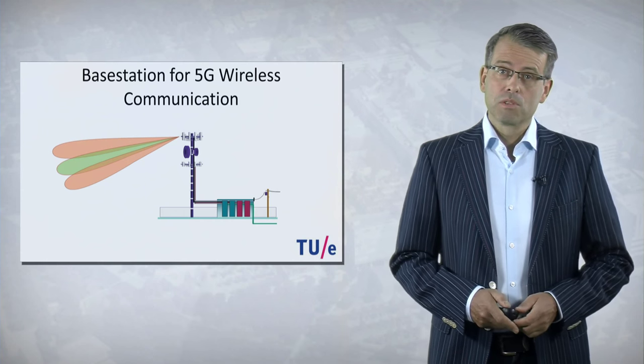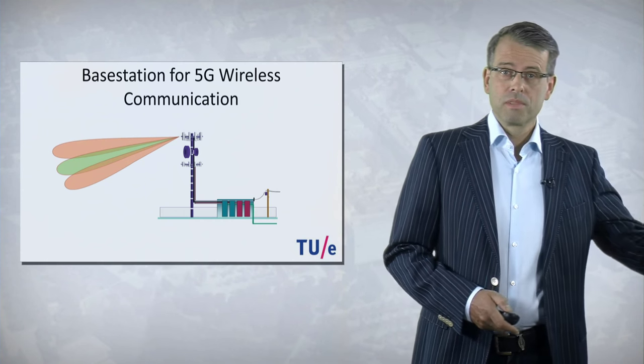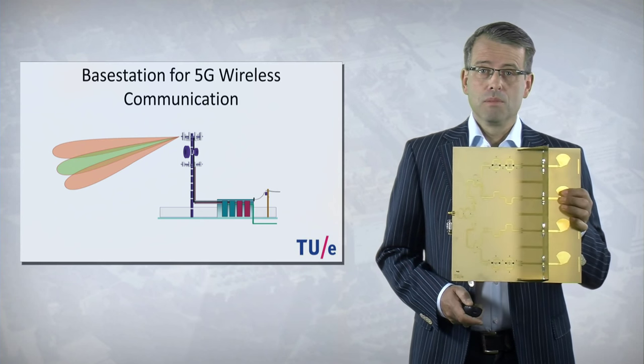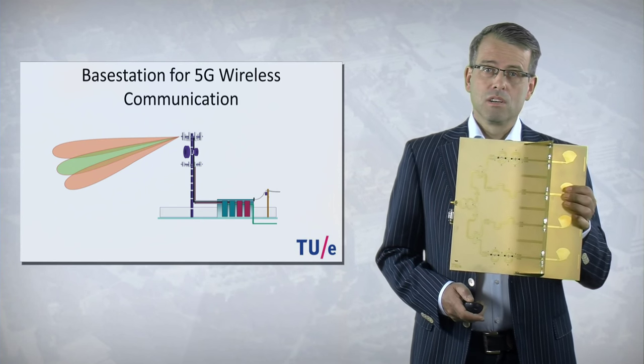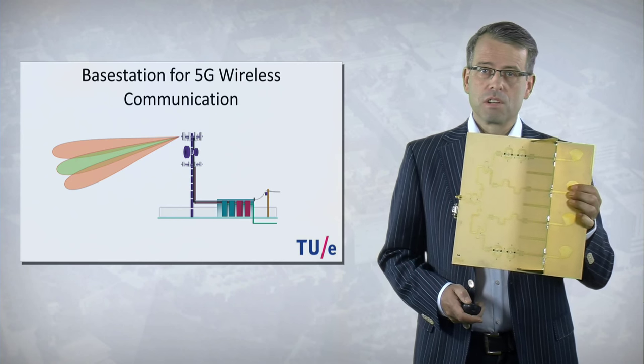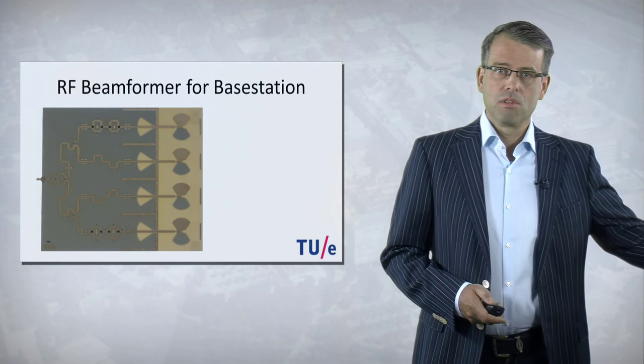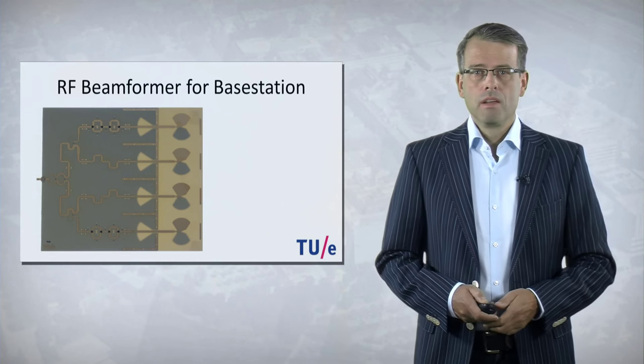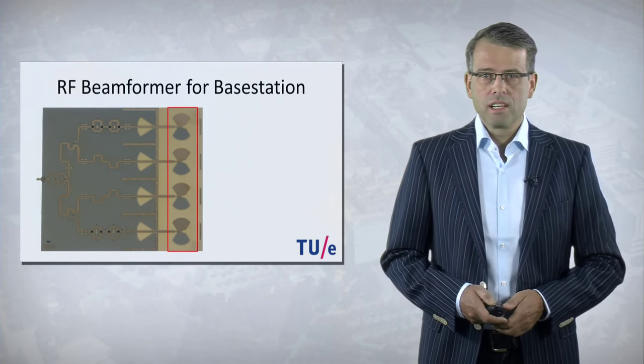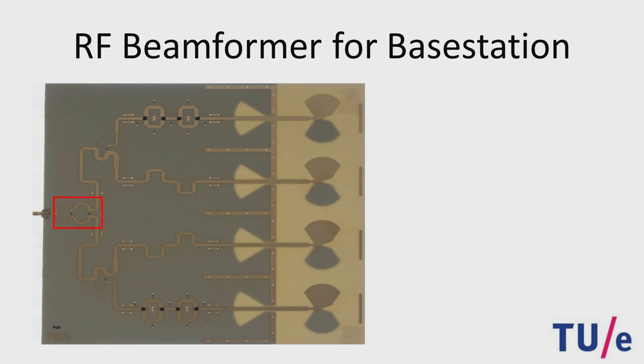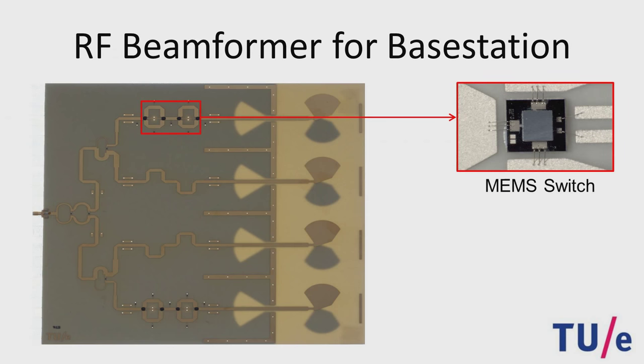Not only in your phone but also in the infrastructure. As an example, I want to show you this board which is in fact used for base stations for 5G wireless communications. The board is a nice example of microwave engineering. It consists of four antenna elements. One of these circuits is a power combiner. Another circuit you can find on this beamformer is a delay unit where MEMS switches are used to switch between a short and long transmission line.